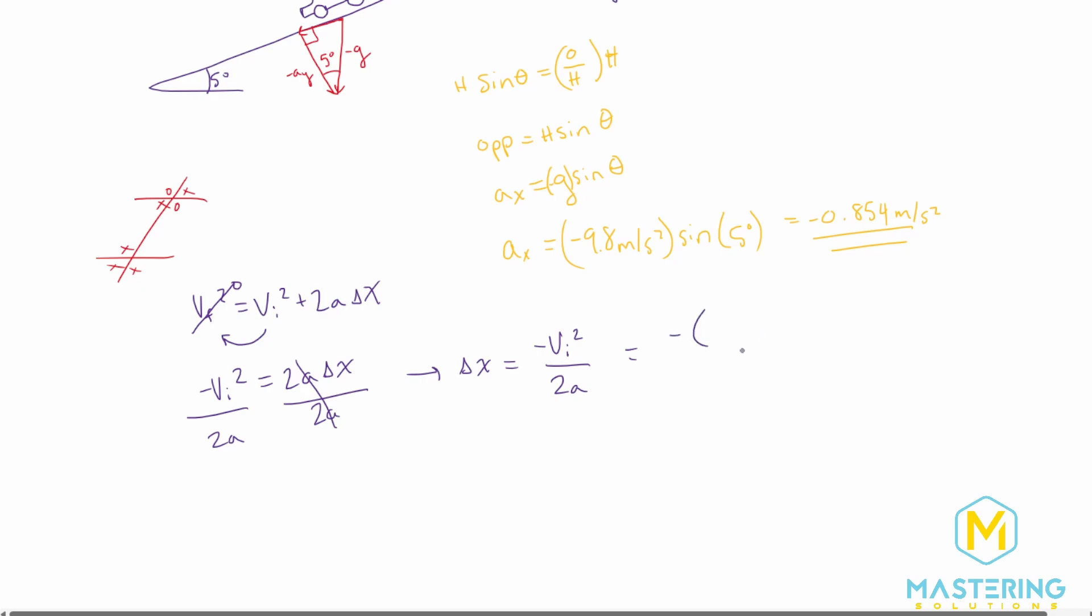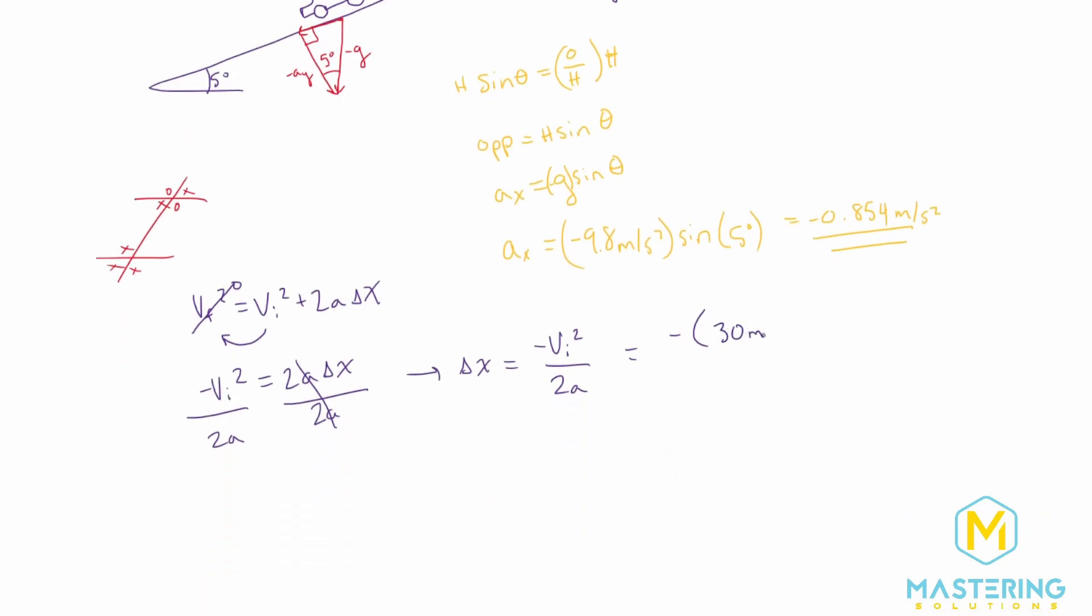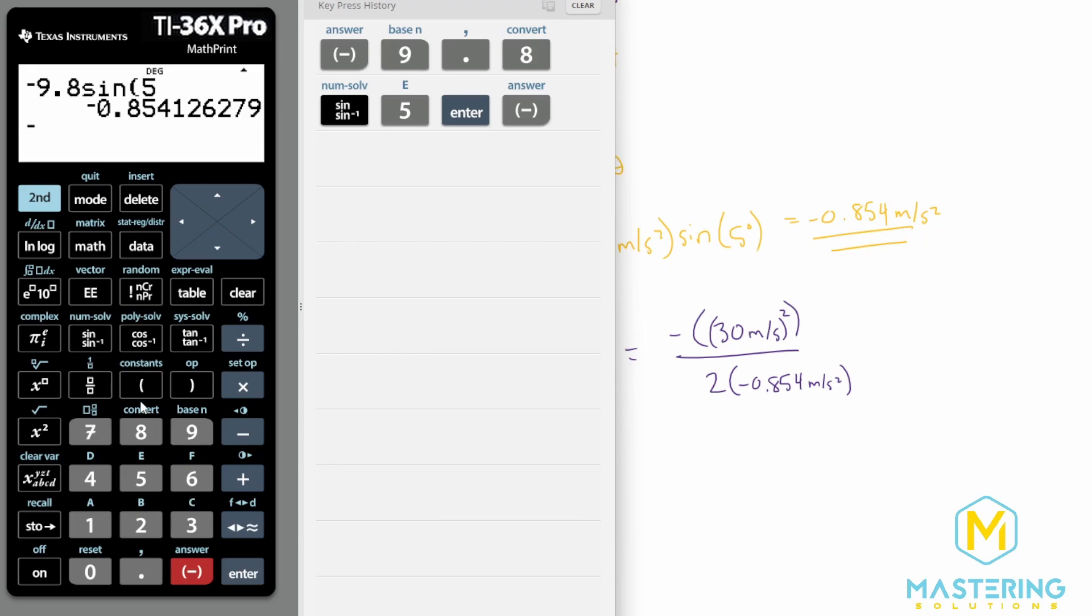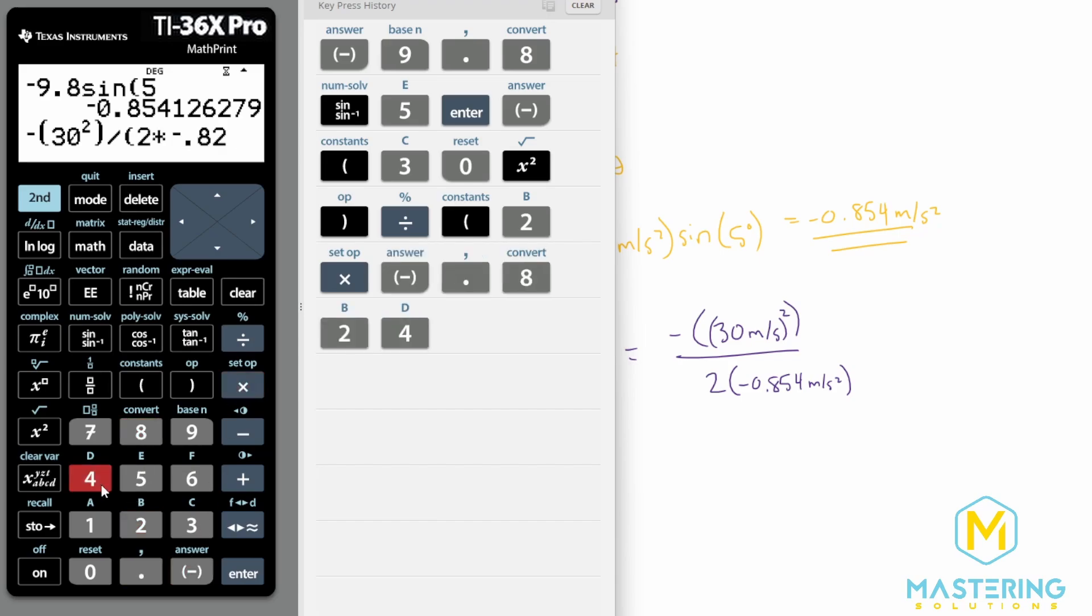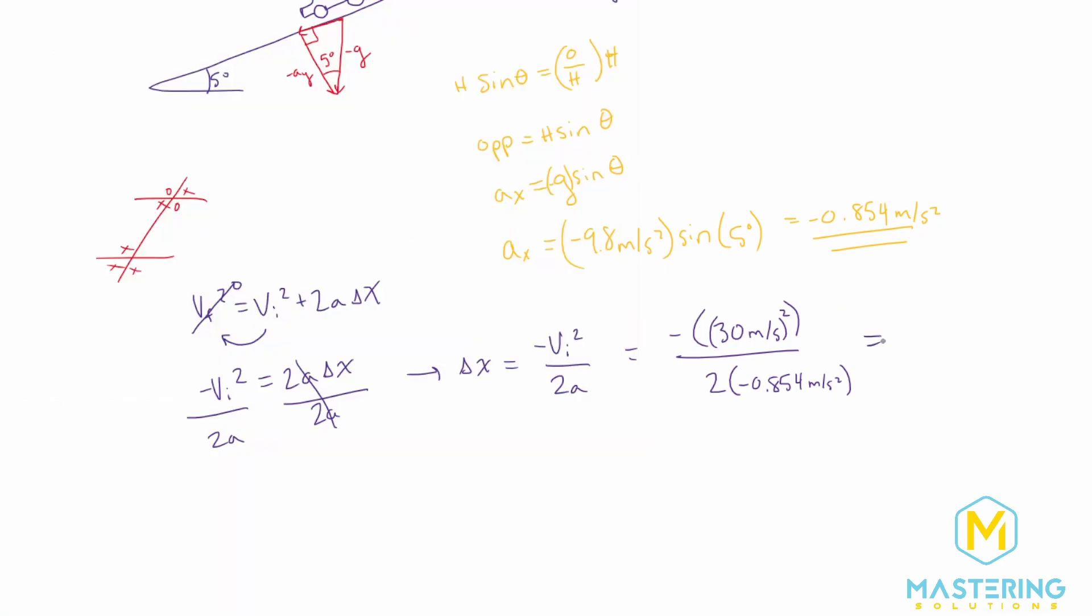The initial velocity is 30 meters per second. So we have 30 meters per second. That will be squared. Don't let that confuse you, it's not squared over the units. And it's divided by 2 times the acceleration. Acceleration is what we found right here. So the negative 0.854 meters per second squared. So we have a negative 30 squared divided by 2 times a negative 0.854. So we have 526. Let's round that to two significant figures. So that will give us 530 meters for how far the car will go before it stops and starts to roll back down the hill.